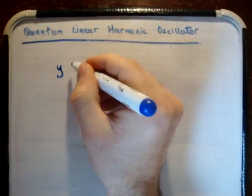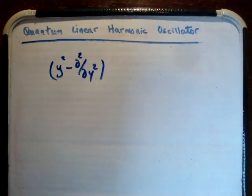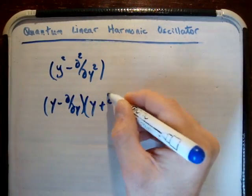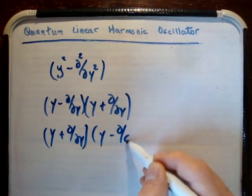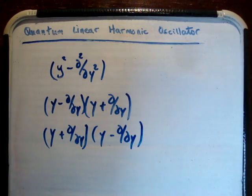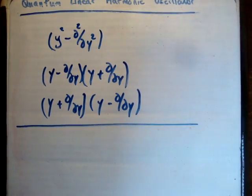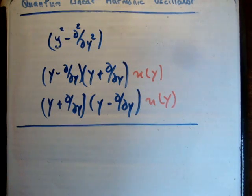What I really want to say is that we have y squared minus del-squared over del-y-squared — ignoring the h-bar omega over 2 because it's just a constant. This is the difference of two squares, so we can factor it as (y minus del/del-y) times (y plus del/del-y), and similarly as (y plus del/del-y) times (y minus del/del-y). You might say surely that's the same thing, but the answer is no. We need to show this, and the way to deal with operators is to multiply by a wave function.